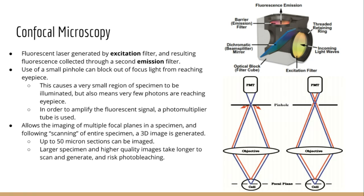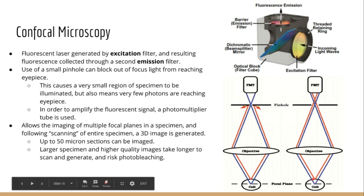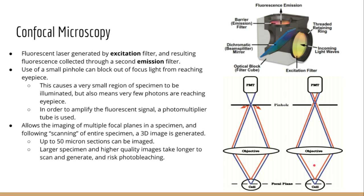The problem with this however is that if you have a thick specimen — say 25 or 50 microns — you're going to be exciting all layers of that section when you image it and it will just be super blurry. Without a pinhole, you can see light from every plane of the specimen being collected by the eyepiece, creating a blurry image because you're getting light from the surface of the cell, the interior, and the bottom.